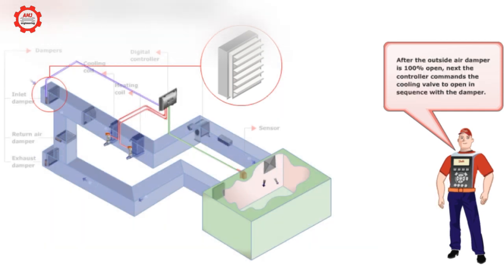After the outside air damper is 100% open, next the controller commands the cooling valve to open in sequence with the damper.